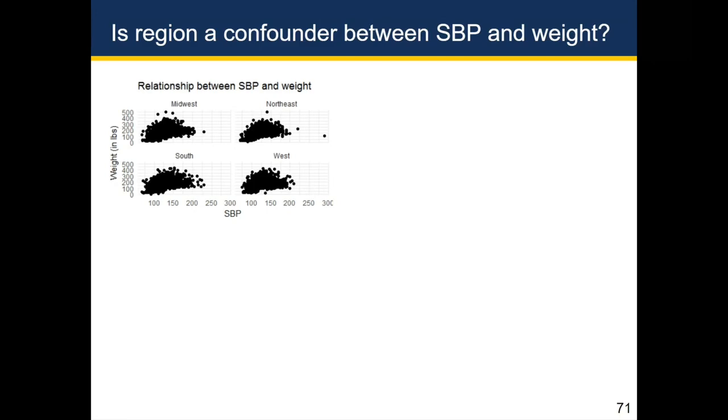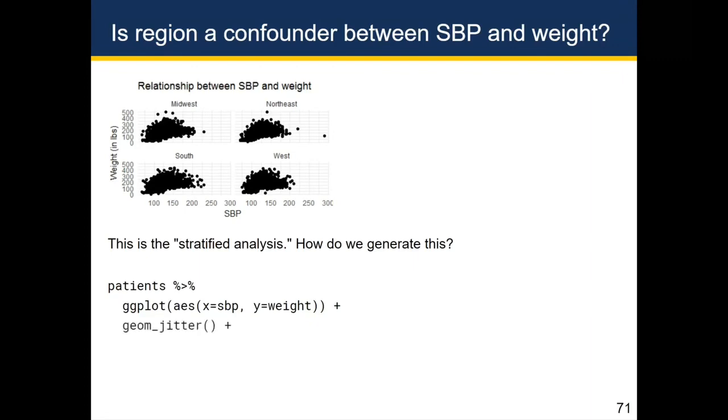So how do I get this plot? This is called the stratified analysis, which we've already discussed. So we start with patients. We add ggplot, and we map systolic blood pressure to X and weight to Y, just like we did before, recognizing that we probably should have reversed those axes given our hypothesis. And then what we're going to do here is add geom jitter, just like we did before, hopeful that this would solve the overplotting issues, but clearly it does not.